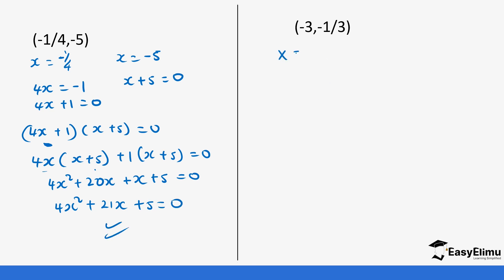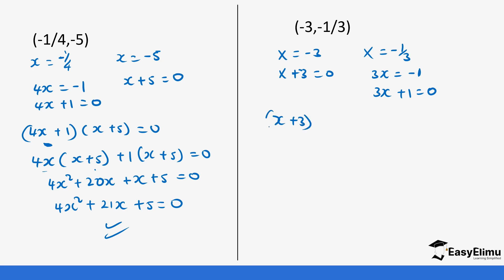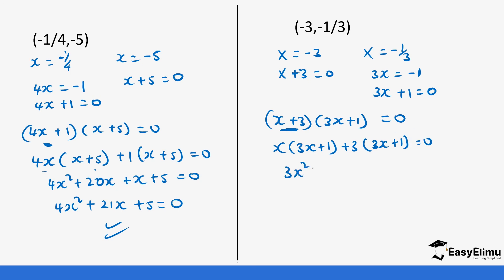Next, x = -3 and x = -1/3. So x + 3 = 0 and 3x + 1 = 0. Multiplying: (x + 3)(3x + 1) = 0. Expanding: x(3x + 1) + 3(3x + 1) = 3x² + x + 9x + 3 = 0. Collecting like terms: 3x² + 10x + 3 = 0.